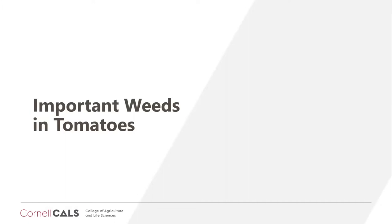Now we're going to switch gears and talk about examples of important weeds in tomato production in New York. I'll go through five broadleaf weeds and one monocot that you've probably seen in your fields, covering a bit about the biology and some good ways to tell them apart from other plants that may look similar.